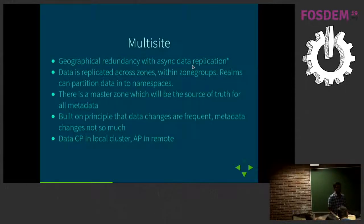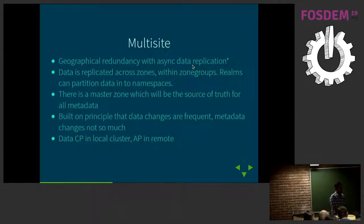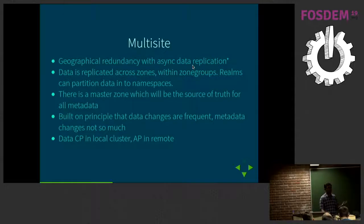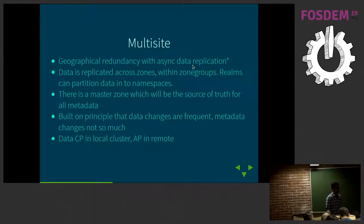You have the concept of zones, zone groups, and realms. A zone would be any RGW or a group of pools — usually a Ceph cluster would be a zone. You always sync data within a zone group, which is a collection of zones. There's always a master zone elected as the source of truth for metadata. Metadata is always synchronously committed to the master, but asynchronously transmitted to secondary RGWs, and data is always asynchronously transmitted to other RGWs.